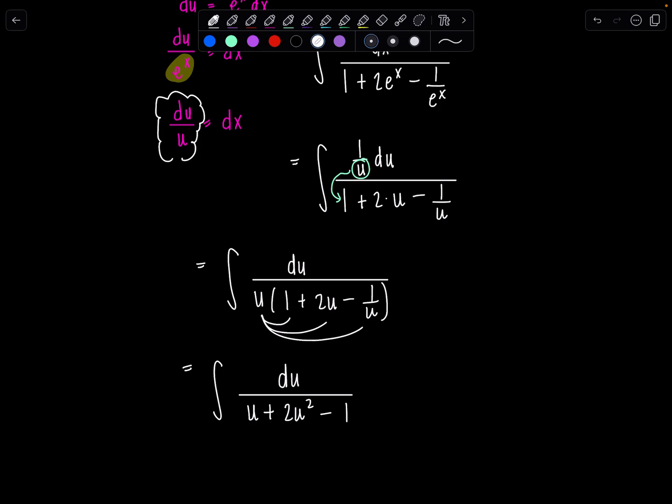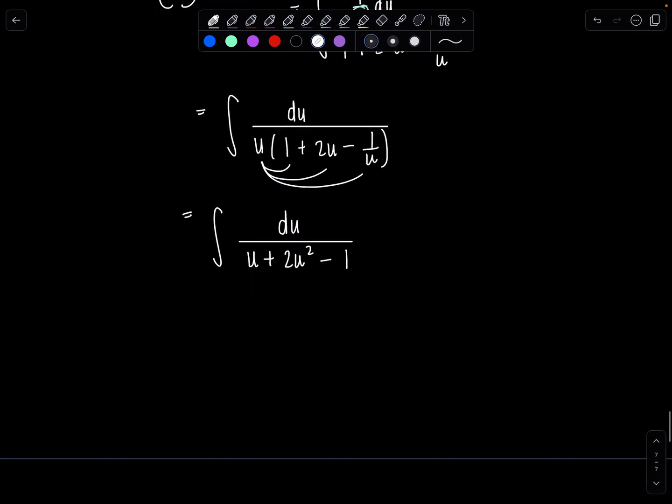How are we doing? See where this is going? It feels like hopefully this denominator is going to factor, and then maybe we'll do partial fraction decomposition, which is exactly what's going to happen. So this is 2u squared plus u minus 1. Time for some partial fractions.